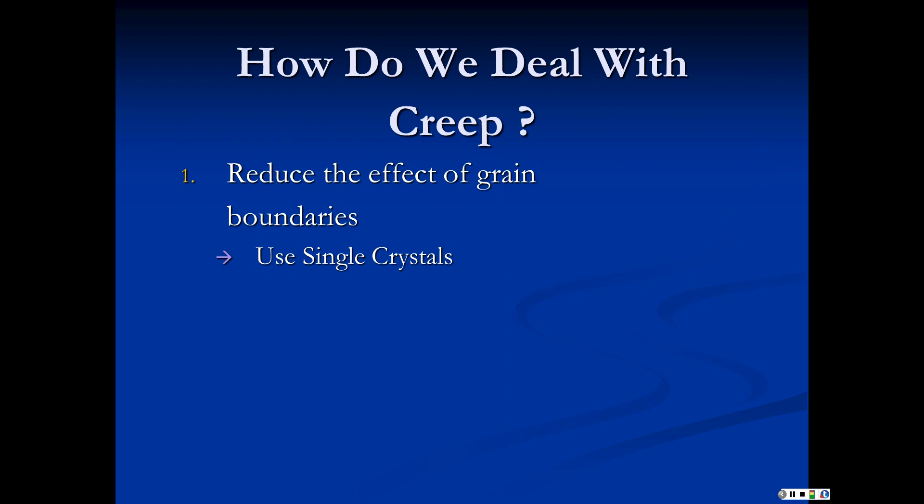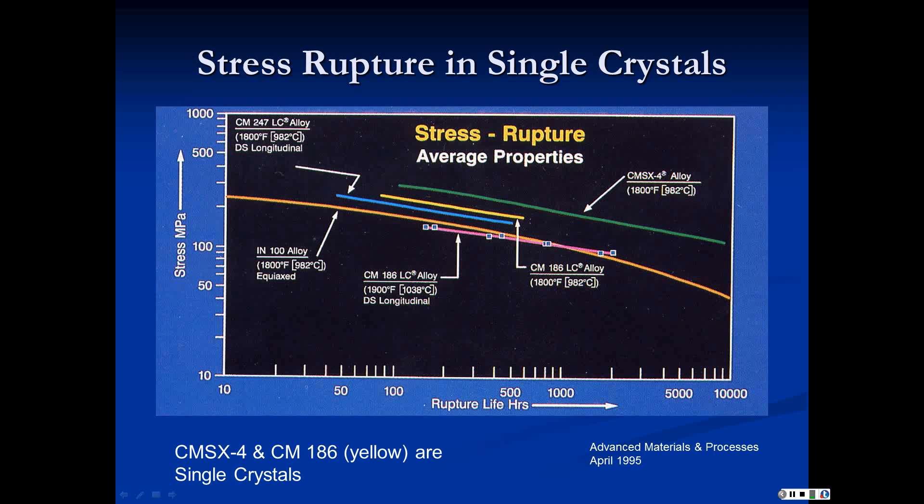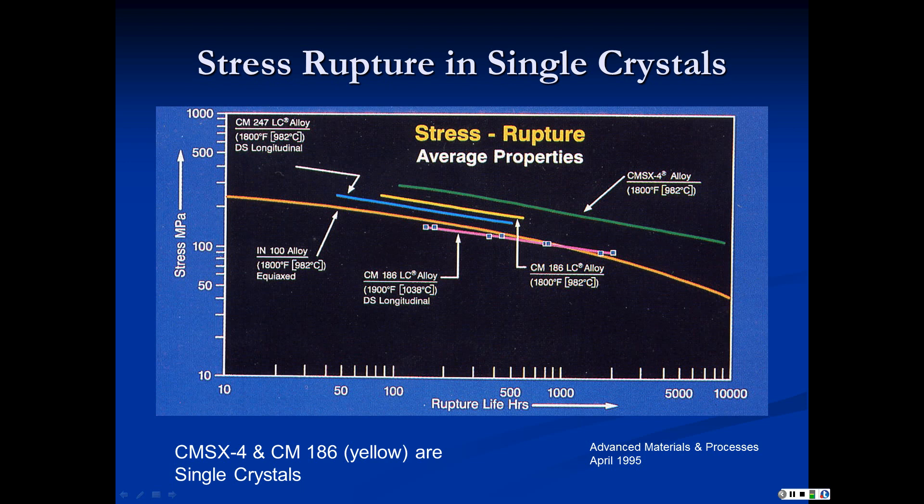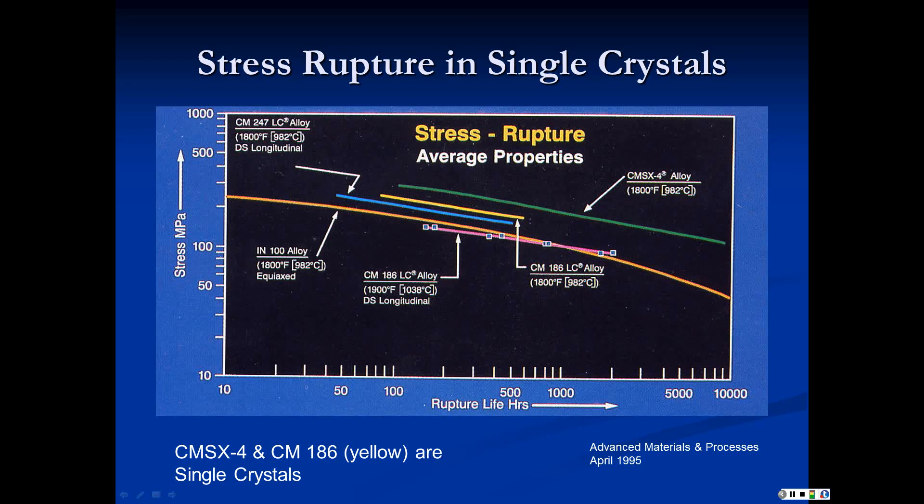So how do we deal with creep? One common thing is to reduce the effect of grain boundaries, get rid of that diffusion along the grain boundaries. We use single crystals. Here we have alloys that are used in turbines, and the yellow outlines are single crystal versions. What you see is that for a given rupture life, the yellow line can be much significantly higher. This is a log scale, so that may be twice as strong. Or for a given stress, they don't even overlap. There's just tremendous improvement in the properties because we went to single crystal.